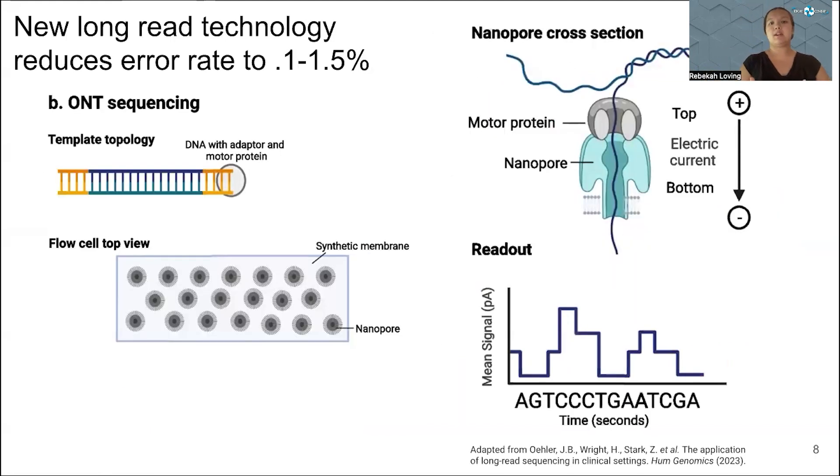ONT sequencing allows us to read off the electric current signal of the different base pairs. It uses a machine learning method to read off what the sequence is most likely to have been from that electric current. With improvements in the nanopore and the motor protein, as well as the base calling algorithm that reads off the sequence from the electric signal, it's gotten to 0.1 to 1.5% error rate.